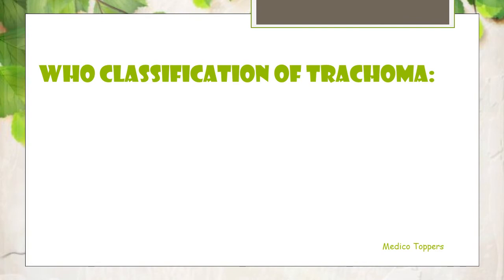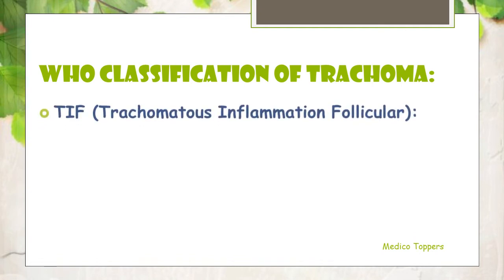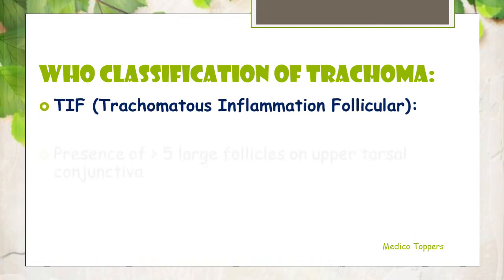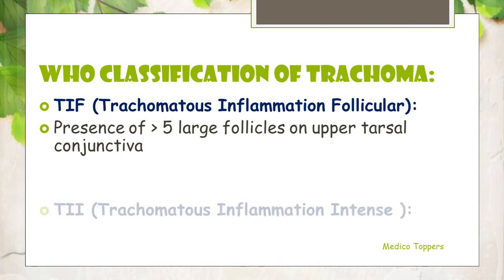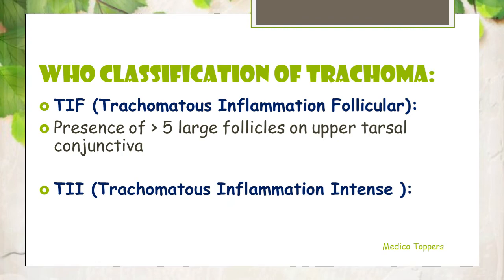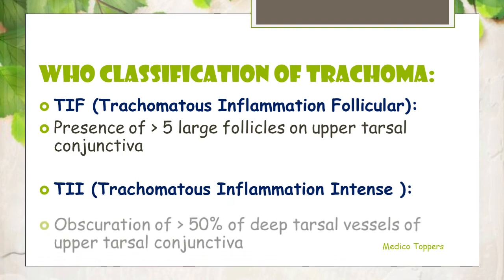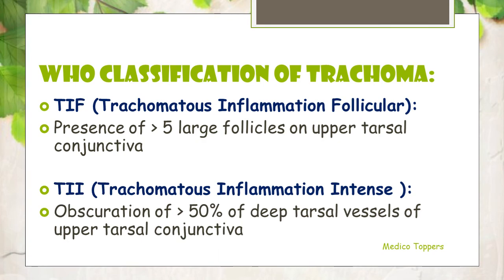Regarding the WHO classification of trachoma, there are 2 different types. One is trachomatous inflammation follicular (TF), where there will be presence of more than 5 large follicles on the upper tarsal conjunctiva. The second is trachomatous inflammation intense (TI), where obscuration of more than 50% of deep tarsal vessels of the upper tarsal conjunctiva can be seen.